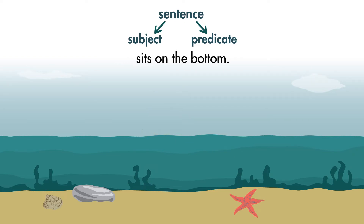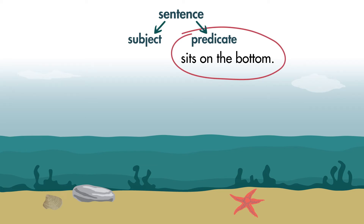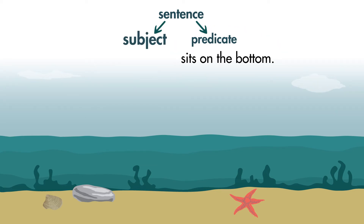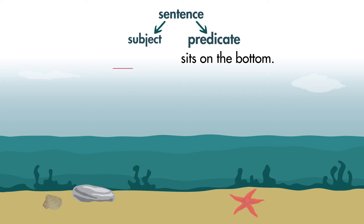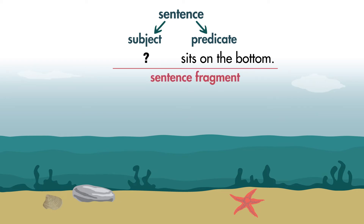Sits on the bottom. Is this a sentence? Sits on the bottom tells what someone or something does, so sits on the bottom is a predicate. A sentence needs a subject and a predicate. This has only a predicate. It is not a complete thought, so it is not a sentence. This is a sentence fragment.